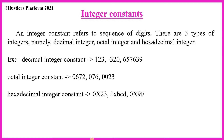The second type of integer constant is octal integer constant. Every octal integer constant starts with the digit 0. For example: 0672, 076, 0023 — all are octal integer constants. It consists of digits 0 to 7.